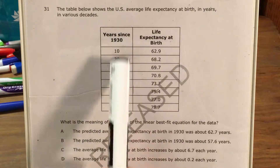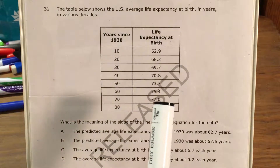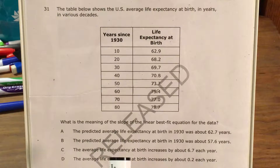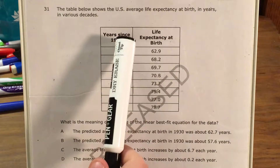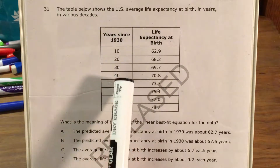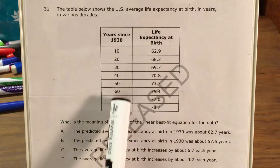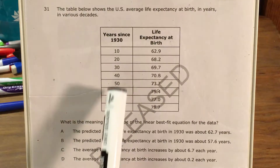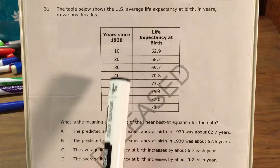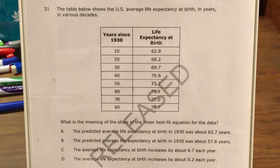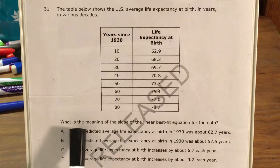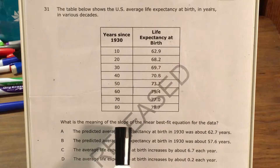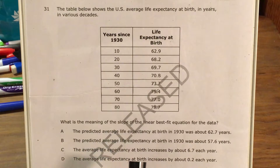We can see that this table shows the U.S. average life expectancy at birth in years, in various decades. Each of these numbers in the X column represents the number of years since 1930, in which the decade started.